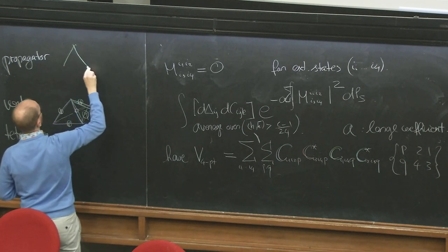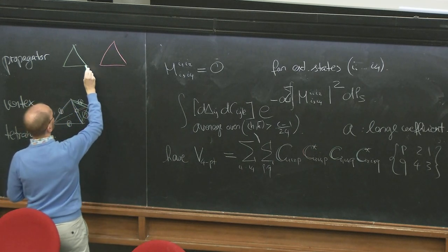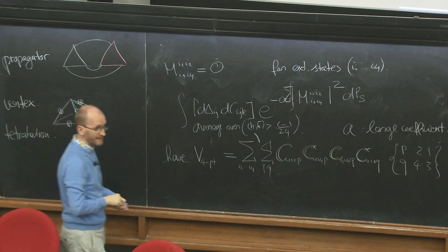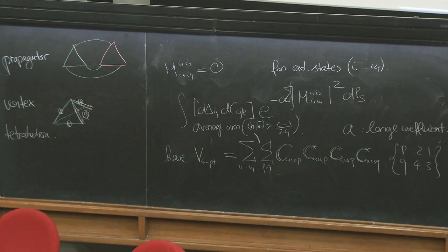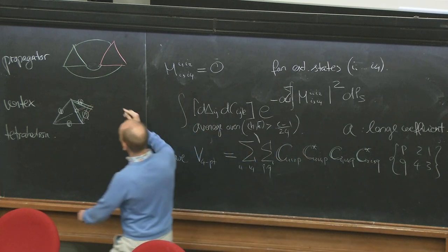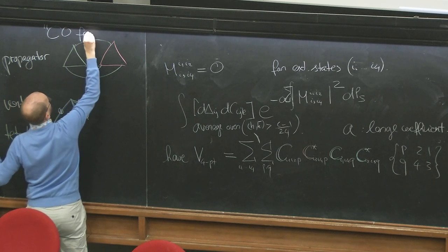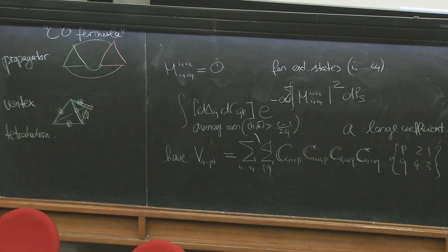This model also contains a quadratic term in C, which basically comes from the identity propagating, making two OPE coefficients equal to one. This gives a particular contraction of the 6j symbol — a propagator in this model that glues two triangles. This propagator comes out to be exactly the C0 formula described by Ponsot and Teschner. In other words, the graphs of this model are 3-simplices that glue triangles, edges, and tetrahedra along vertices of tetrahedra — this is a version of simplicial 3D gravity.